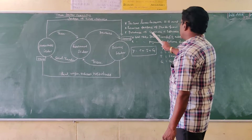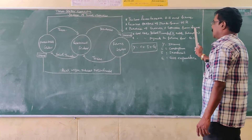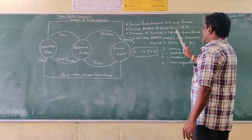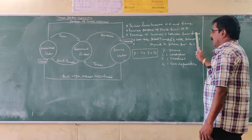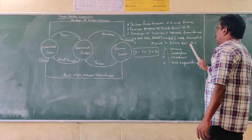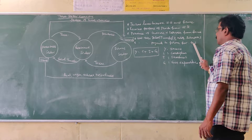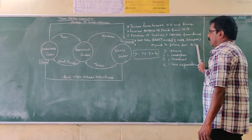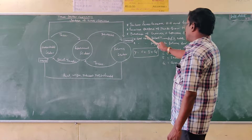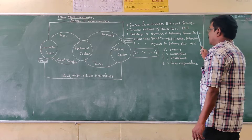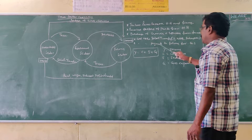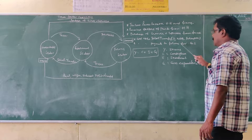The government purchases goods and services from the firm sector. The government makes the necessary payments to the firms for the purchase of those goods and services.